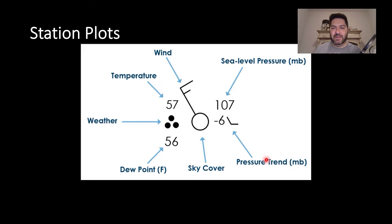Then you have the pressure trend in millibars. In this case, the pressure was dropping at six millibars over a period of time. And you have the sea level pressure here. We won't go too much into detail on the pressure, but you get the idea.